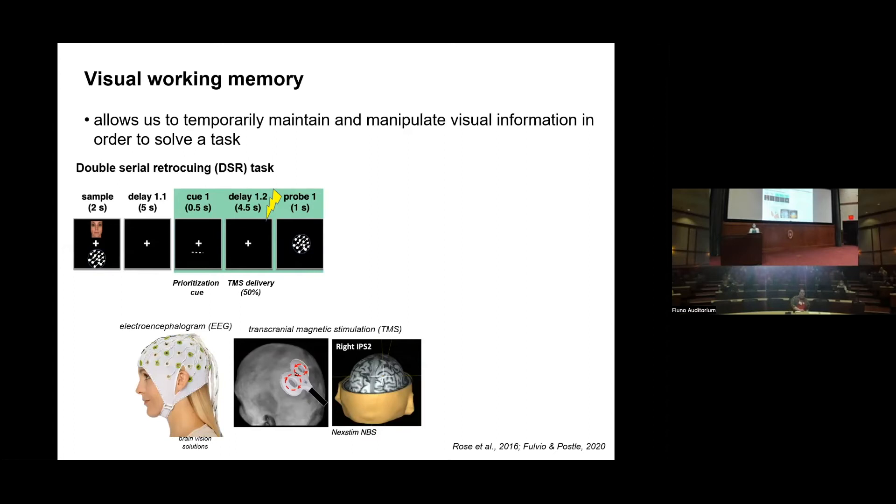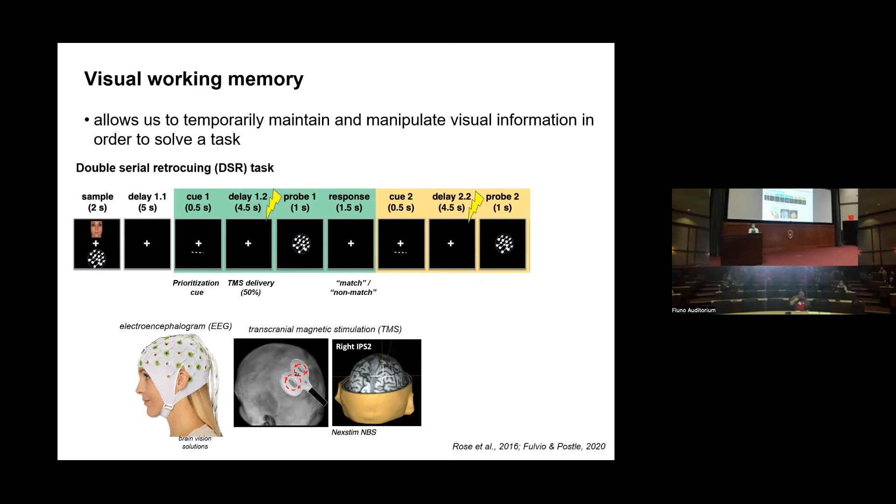At the same time we're also recording EEG, so we're recording participants' brain waves. At test, participants simply indicate whether the item is a match or non-match to the original sample item. Then the process repeats one more time in the trial. They receive another cue—in this case they're being tested on the same item again. On half of the trials it actually switches and they're tested on the other item. Then there's another delay with a TMS pulse and a response.